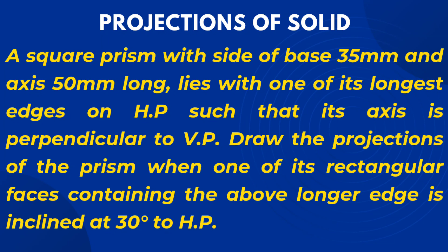So basically here a square prism is given to us. The square prism is perpendicular to VP and parallel to HP. It is resting on one of its longer edges on HP such that one of the rectangular faces passing through that longer edge is inclined at 30 degrees to HP. We will first draw the view in which we are able to see the base of the solid. The base of the square prism is visible in the front view. Let us start drawing and move to AutoCAD.